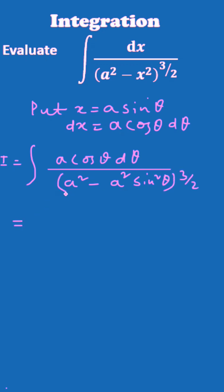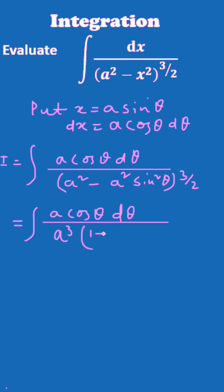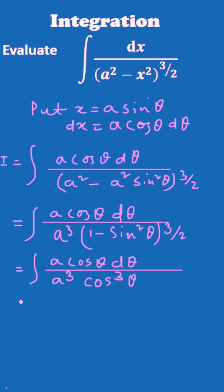If you simplify this, you will get it is equal to the integral of 1 by a² into 1 by cos² θ dθ. That is, it will be sec² θ dθ.